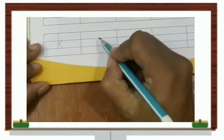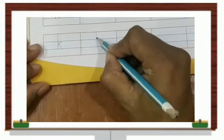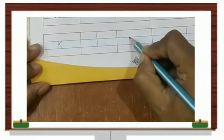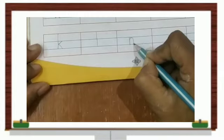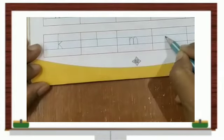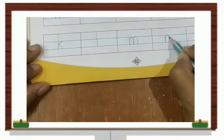One more time we'll write. We write K. After K comes L. Then comes M. Then comes N. O.